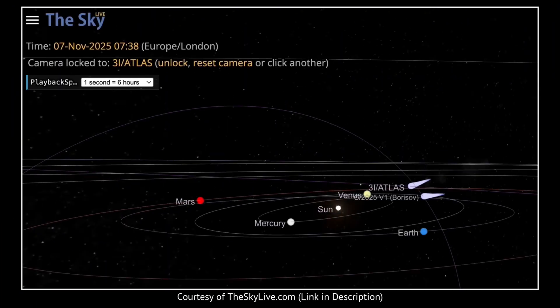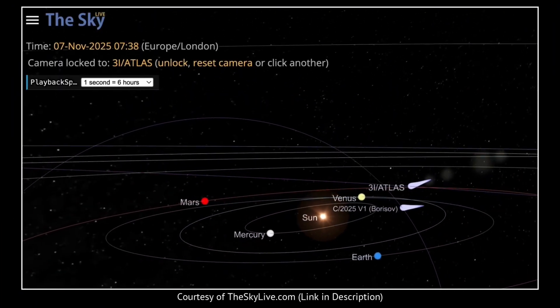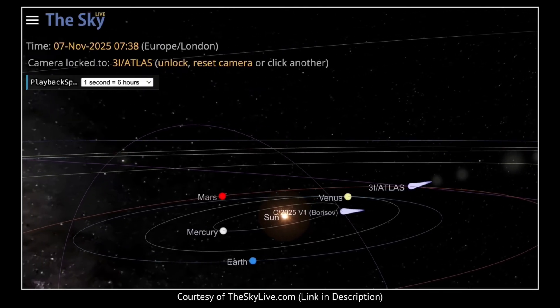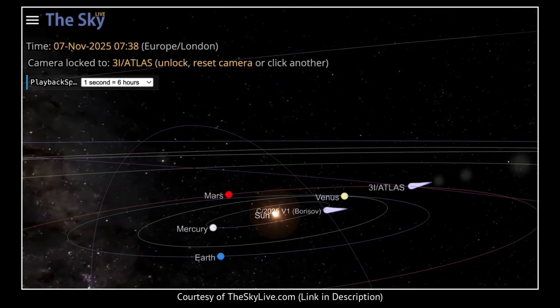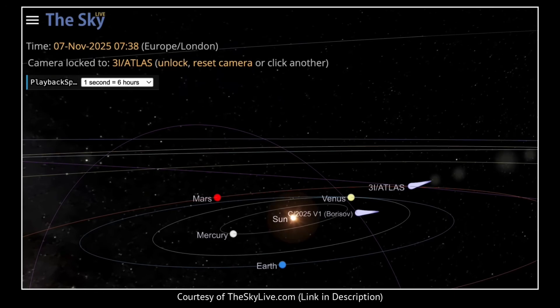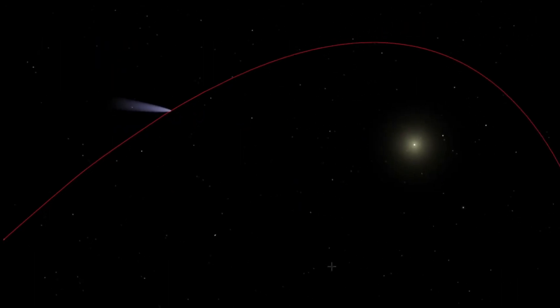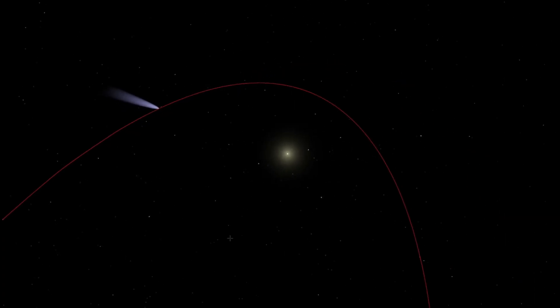Then came November 11th, the image that changes everything. The tail stretches roughly 0.7 degrees across the sky, which is wider than a full moon. It's not just longer, it's more structured and more organized.